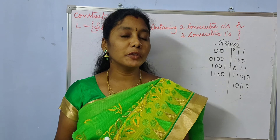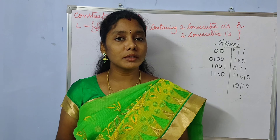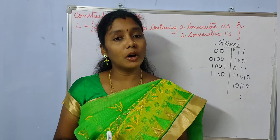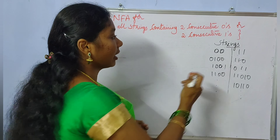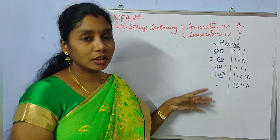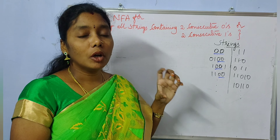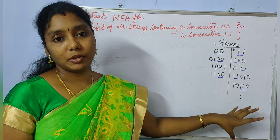Welcome back. In this video we are going to construct the NFA to accept strings consisting of either two consecutive zeros or two consecutive ones. All these are the possible strings under the language — each string consisting of two consecutive zeros or two consecutive ones. We need to construct an NFA that accepts either kind of string.